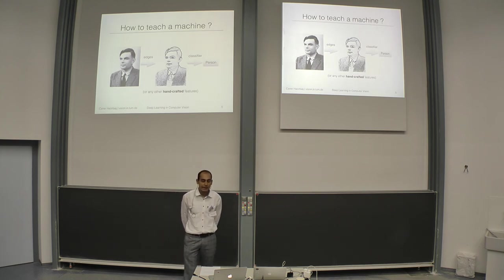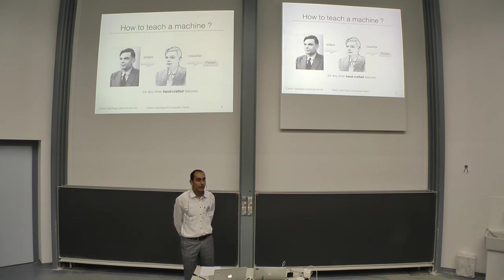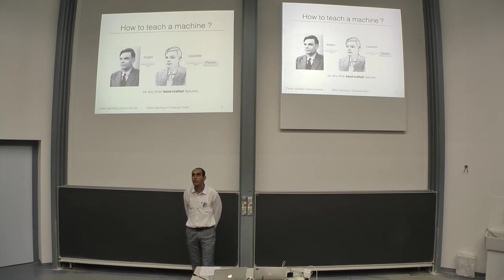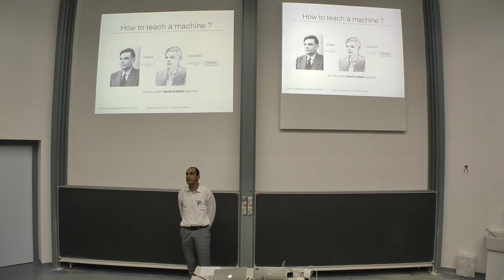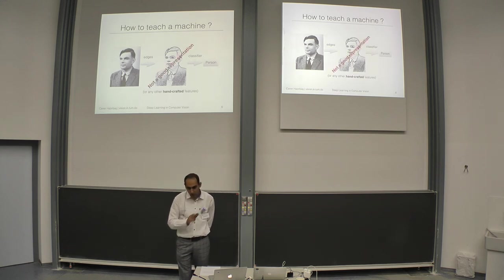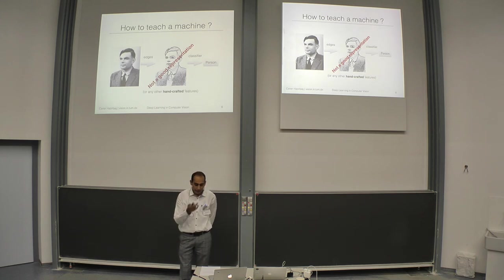In computer vision, our observations are only images. What you do is take an image and compute some features — these can be edges or more sophisticated handcrafted features. Then you train a classifier that classifies the image as expected. For example, you input an image of Alan Turing and expect the classifier to tell you that he is a person. But most of the time, these basic or handcrafted features are not a good representation of the data.